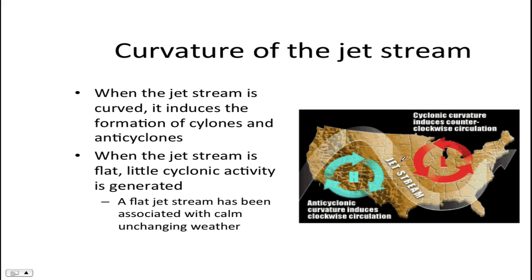The jet stream also plays a role in creating storms. If the jet stream is very curved, it will help produce high and low pressure cells, which work together to form storms. However, if the jet stream is a bit more flat, high and low pressure systems are far away from each other, which creates long stretches of unchanging, usually nice weather.